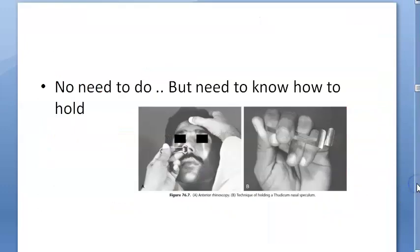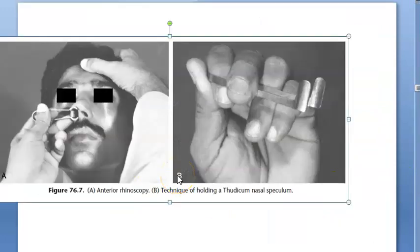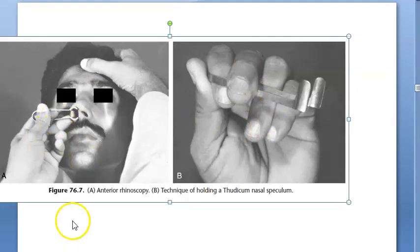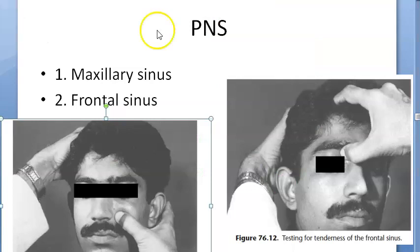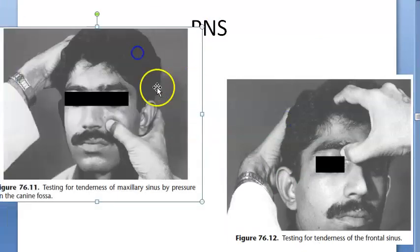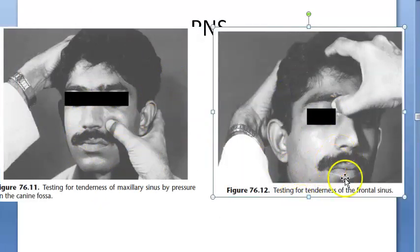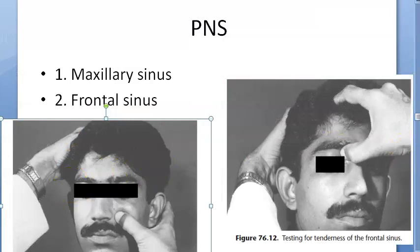Know how to hold the Thudicum nasal speculum: place it on the index finger of your left hand, with the middle finger outside and ring finger inside. For paranasal sinuses, check for tenderness over the maxillary sinus at the canine fossa and over the frontal sinus.